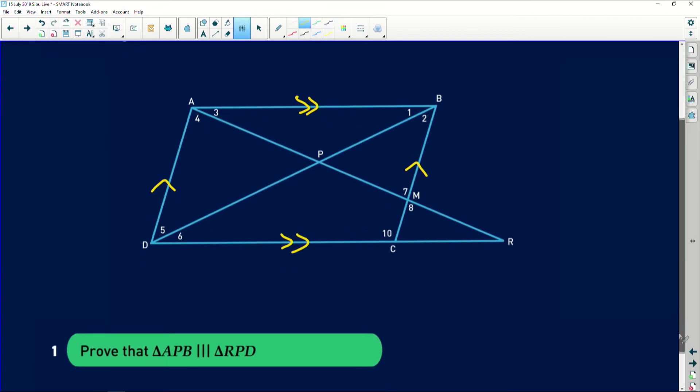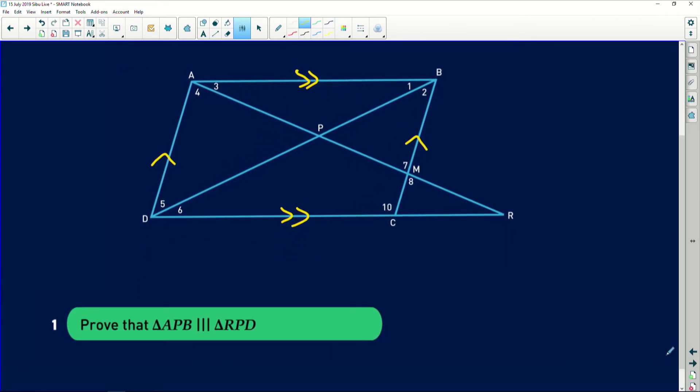What's the story? Prove that triangle APB is similar to triangle RPD. So APB is this triangle here at the top. It has to be similar to triangle RPD. We need to prove that those two triangles are similar to each other.